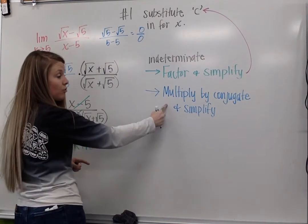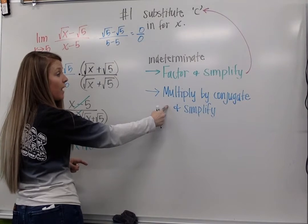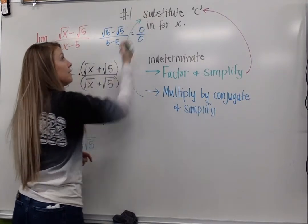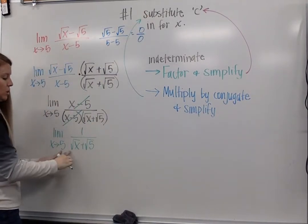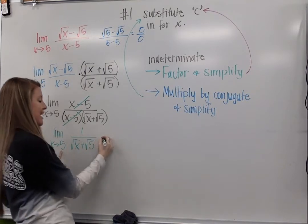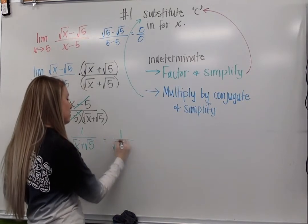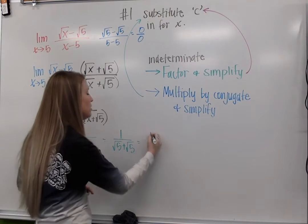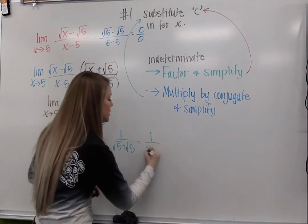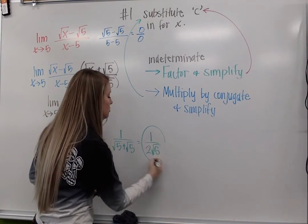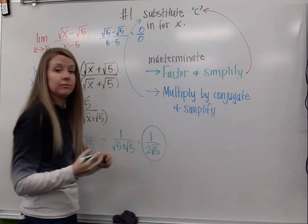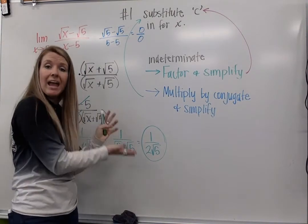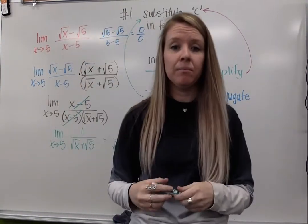After I multiply by my conjugate and simplify, I'm ready to come back and substitute. I'm going to plug that in: 1 over (√5 + √5), which gives me 1 over 2√5. And we have a number — we have a value. That is my limit.